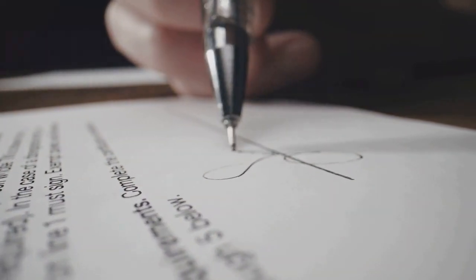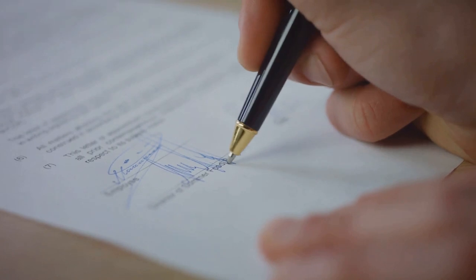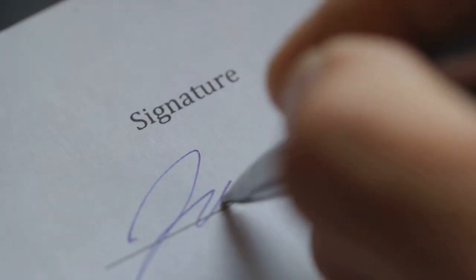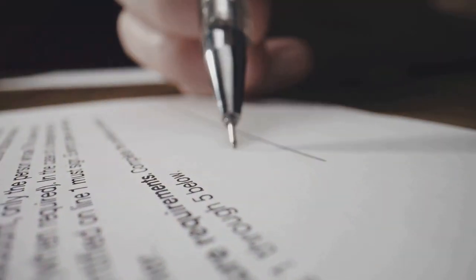The notary then witnesses the signing of the documents. This is more than just watching someone put pen to paper. The notary is there to ensure that the parties sign the documents in the correct places and in the proper order. This step is vital because it helps to prevent any confusion or misunderstandings that could lead to legal disputes down the line.